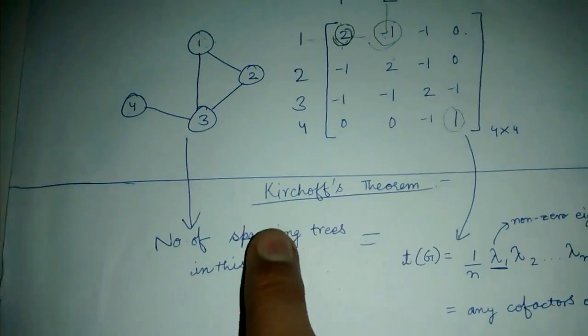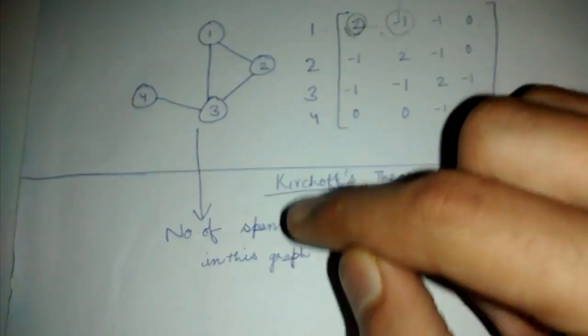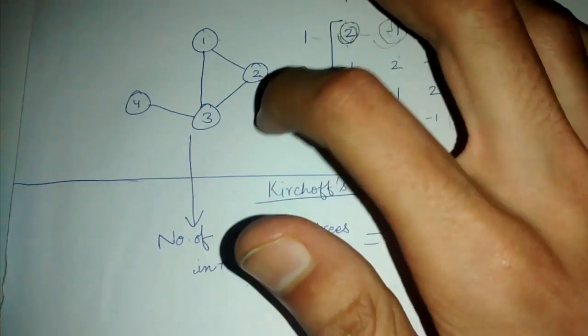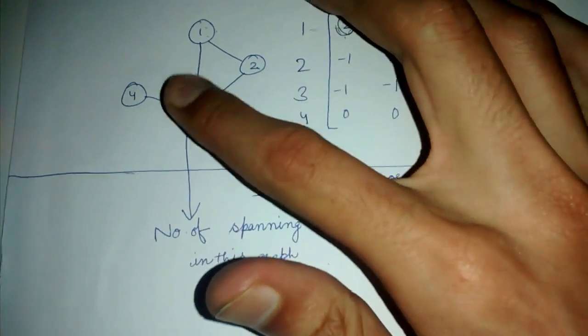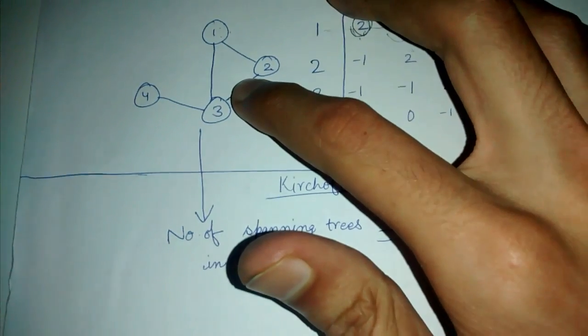Now we want to count the number of spanning trees in this graph. So spanning tree is we consider all the vertices of the graph but only a subset of the edges of the graph such that there is no cycle in it.